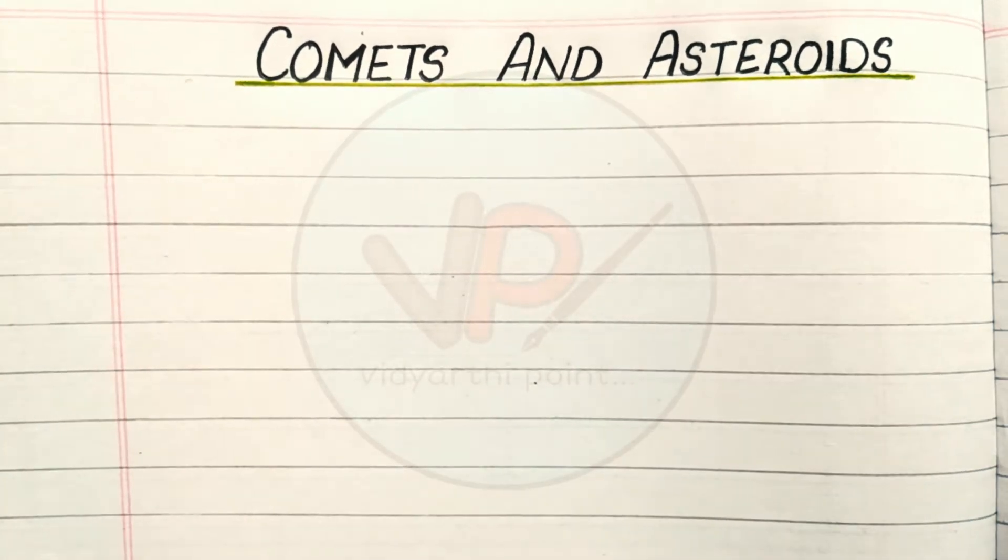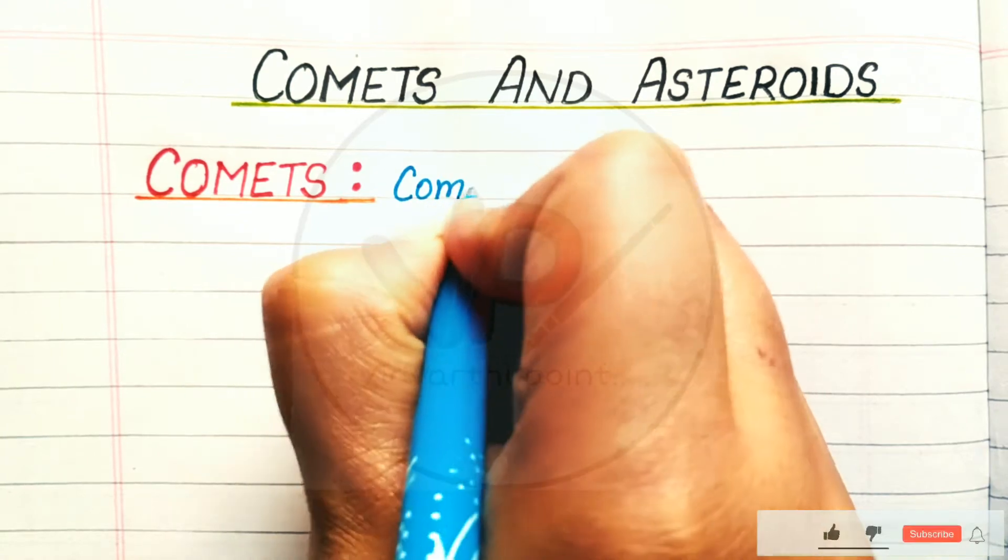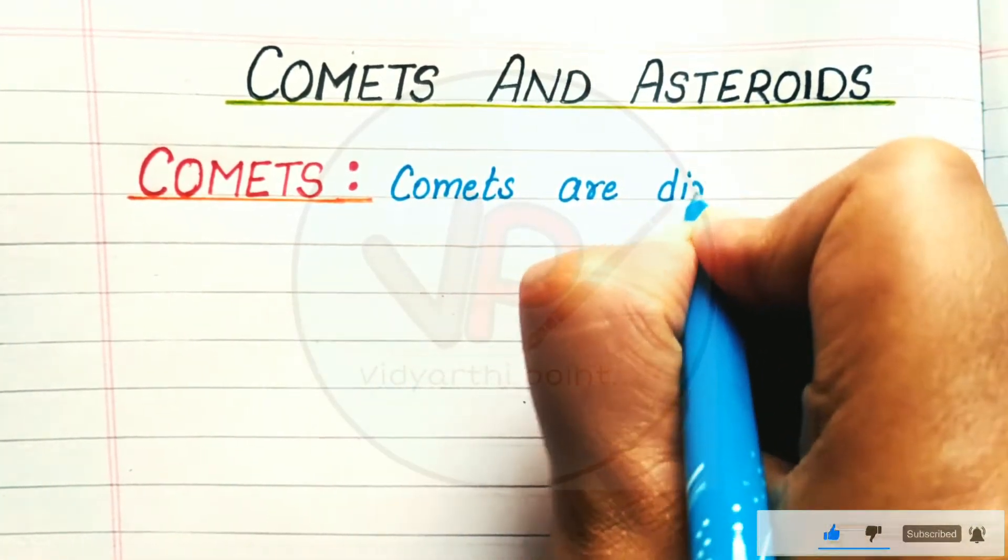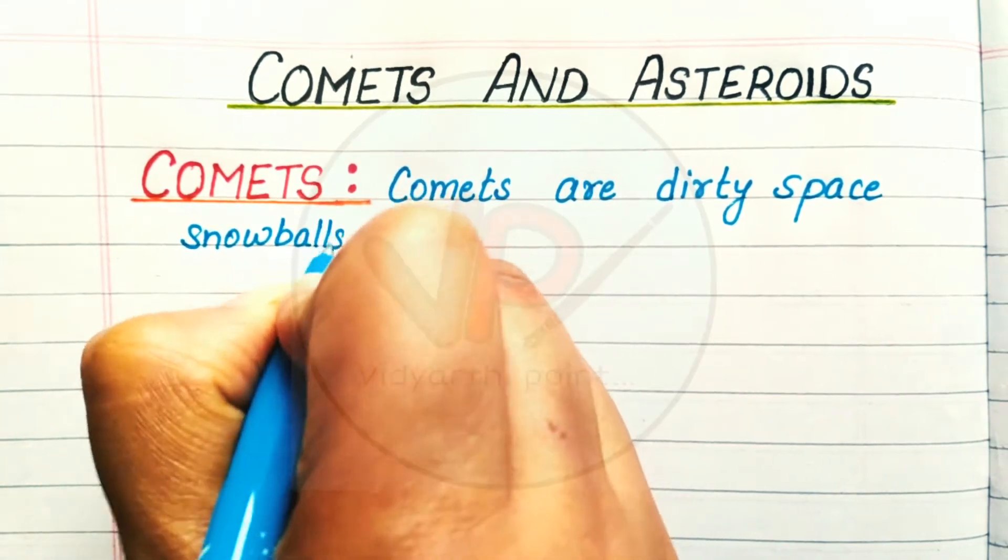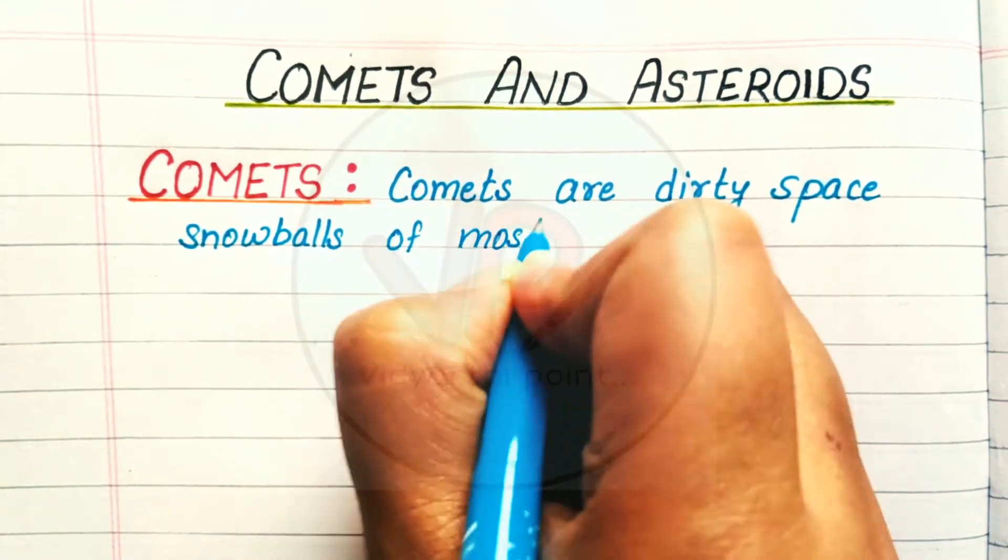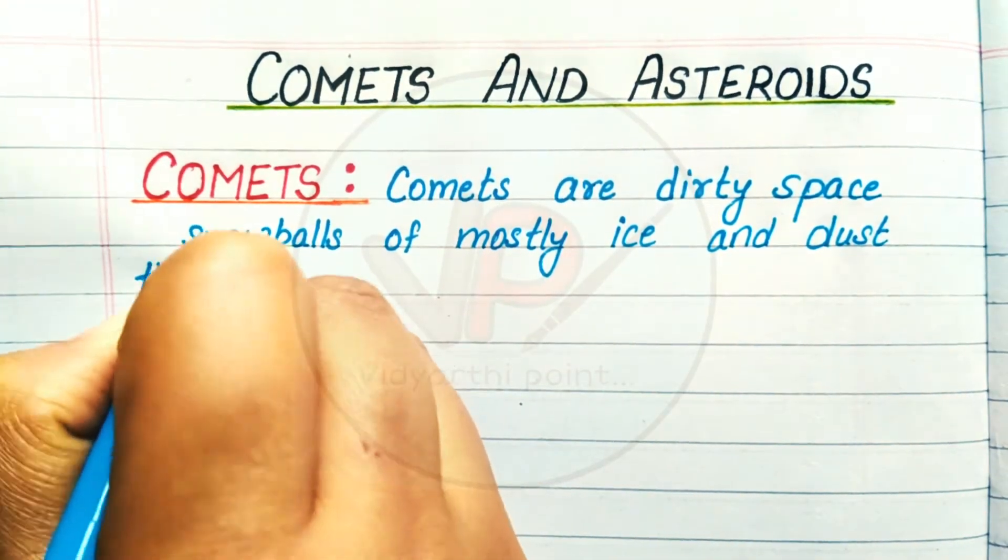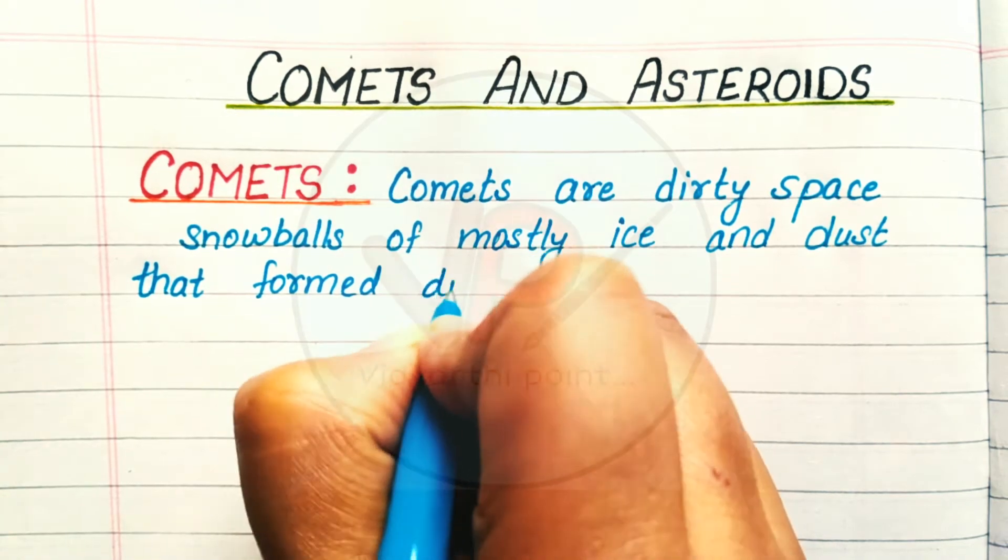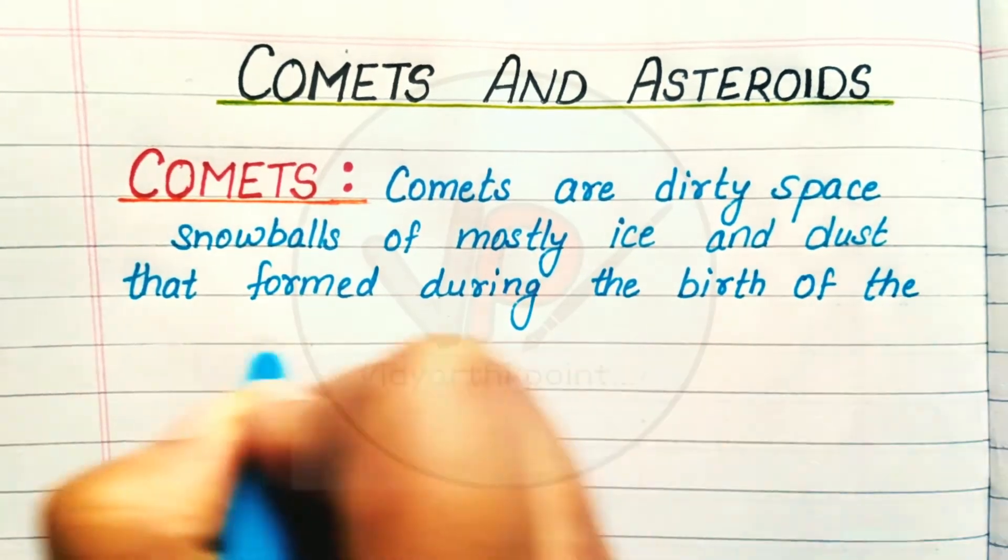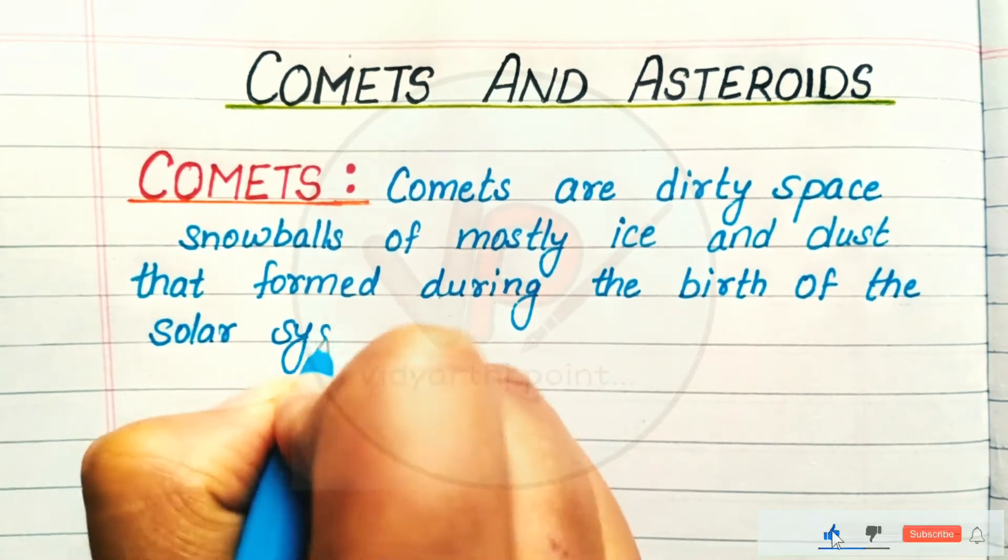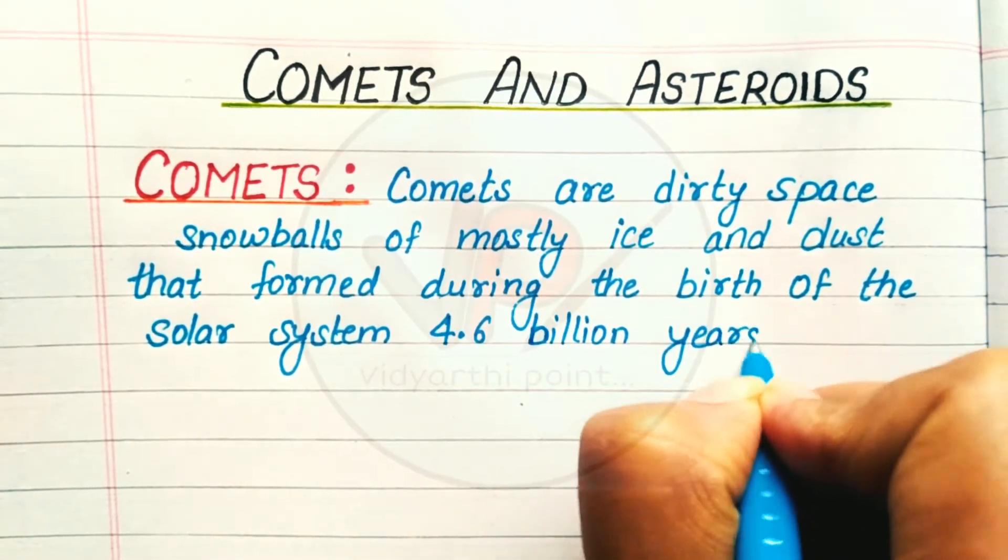Hello everyone and welcome back to my channel Vidyarthi Point. Please do like, share, and subscribe to my channel and comment in the comment section about the videos. Today's topic is comets and asteroids. Comets are dirty space snowballs of mostly ice and dust that formed during the birth of the solar system 4.6 billion years ago.